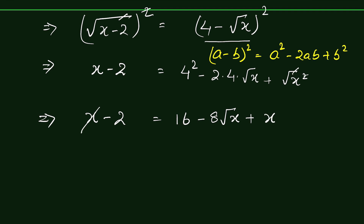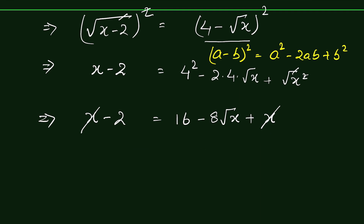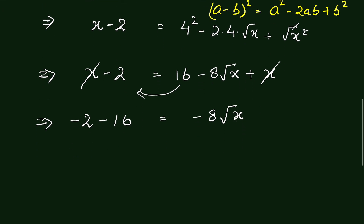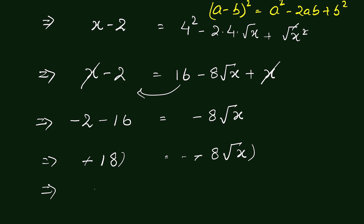Now x on the left and x on the right cancel. Sending 16 to the left hand side gives minus 16, so we have minus 2 minus 16 equals minus 8 times square root of x, which is negative 18 equals minus 8 times square root of x. Multiplying both sides by minus 1, this becomes 18 equals 8 times square root of x.